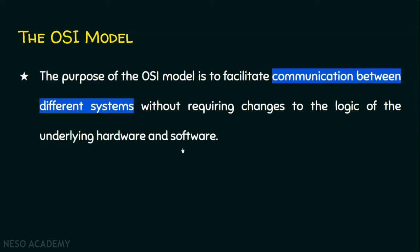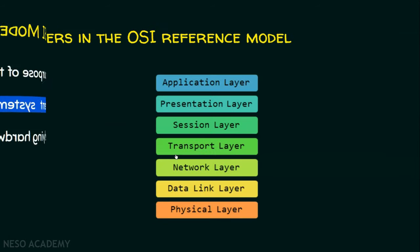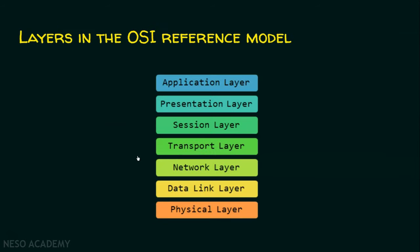Now we will see what are the various layers in the OSI reference model. Basically, there are seven layers: application layer, presentation layer, session layer, transport layer, network layer, data link layer, and physical layer.